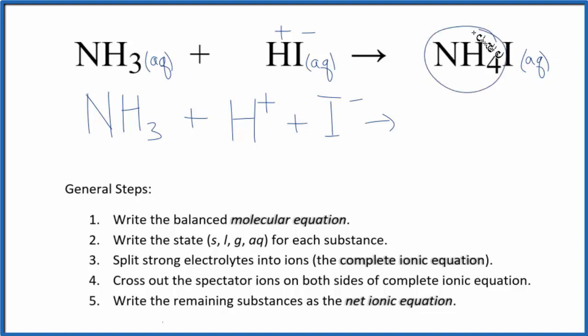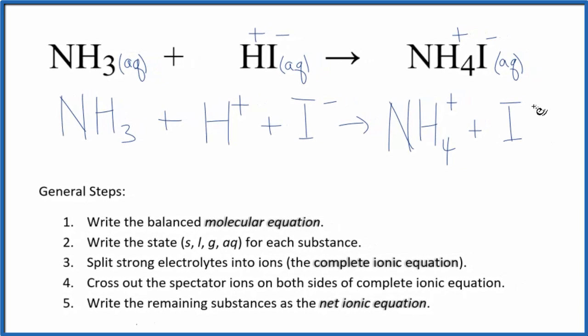The ammonium ion has a 1 plus ionic charge, a good one to remember. And we said iodine forms the 1 minus ions. So, we'll have NH4 plus, plus the iodide ion, I minus. And we split this apart because it's aqueous and it's a strong electrolyte as well because of the ammonium ion. This is the complete ionic equation.